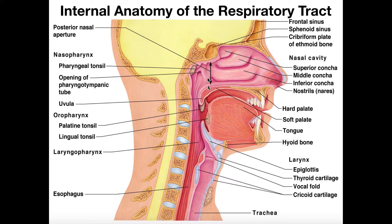Back here, this little gateway is labeled the posterior nasal aperture. This is where the internal nare, or internal nostril, is located. We have external nostrils — two of them — and we also have an internal nostril. The internal nostril or internal nare is just a space where air travels during inhalation to go further into the respiratory tract.